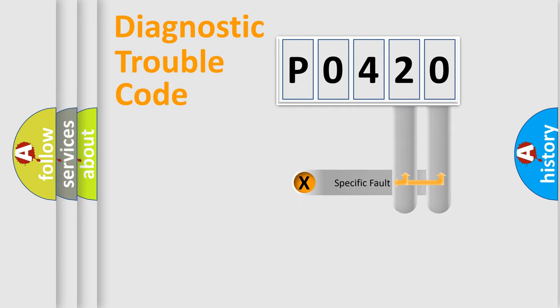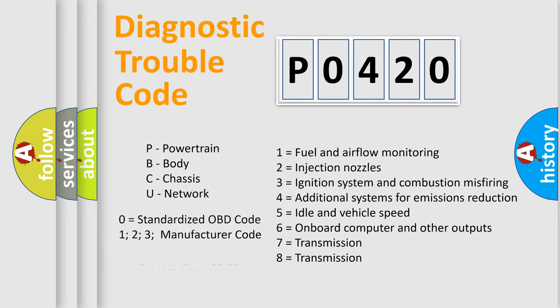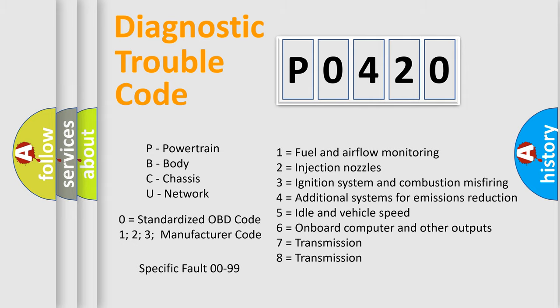Only the last two characters define the specific fault of the group. Let's not forget that such a division is valid only if the second character code is expressed by the number zero.